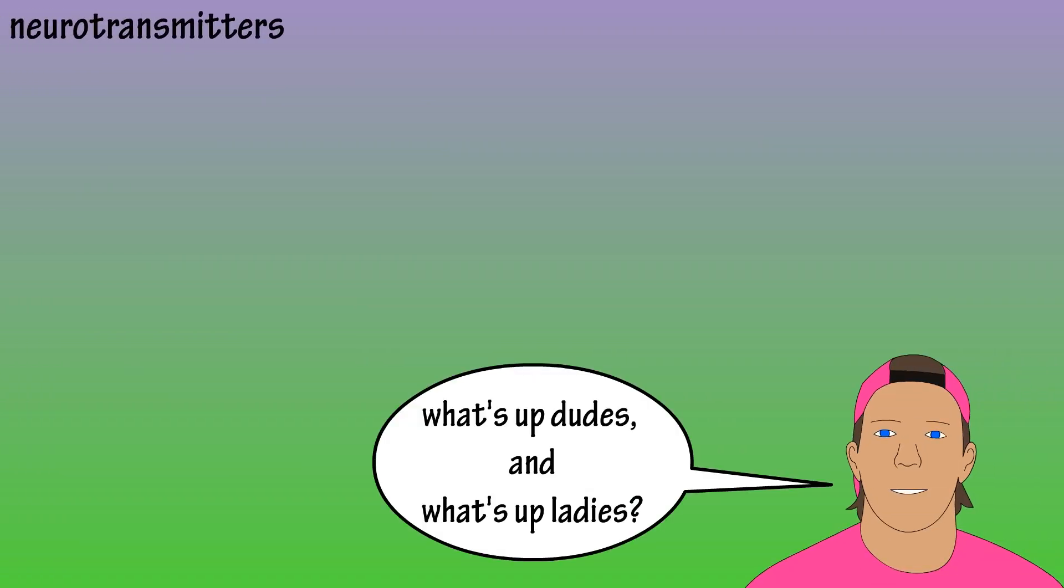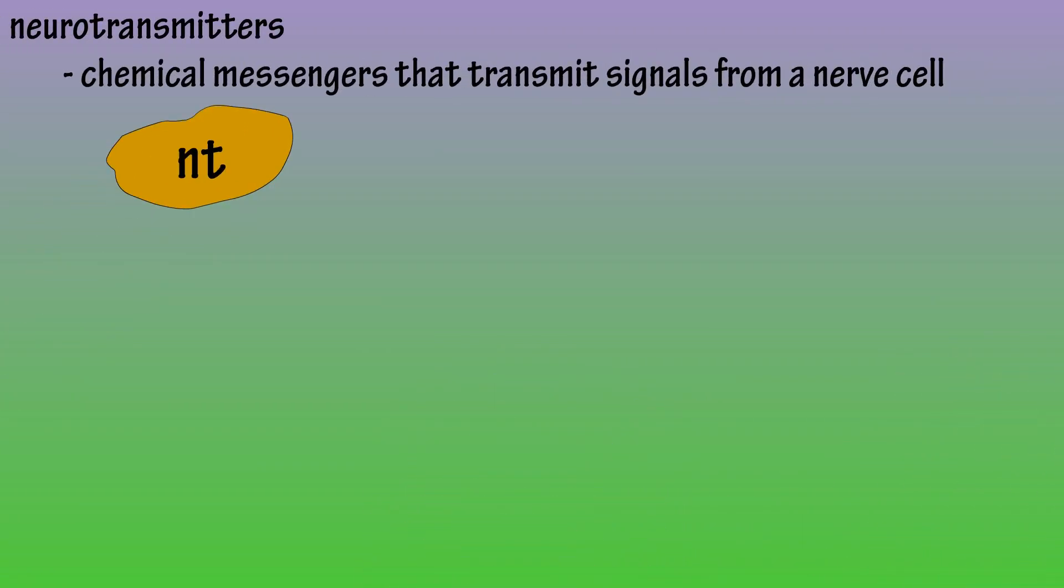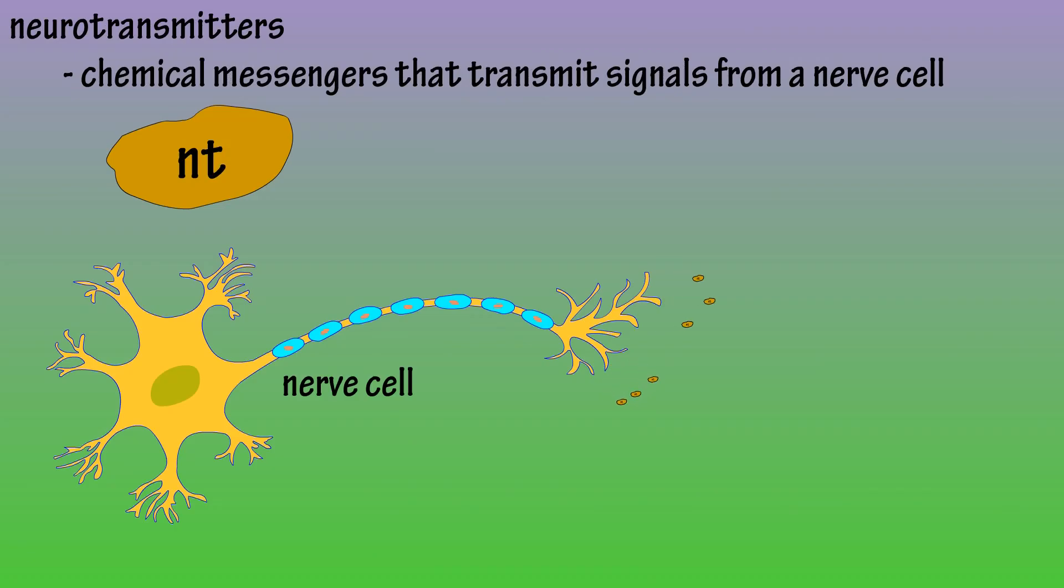What are neurotransmitters? Well, neurotransmitters are chemical messengers that transmit signals from a nerve cell.